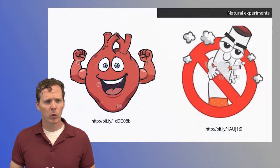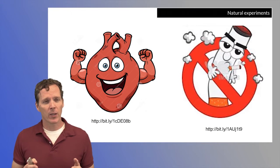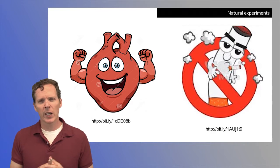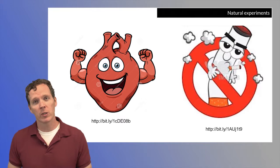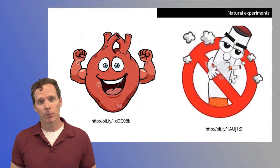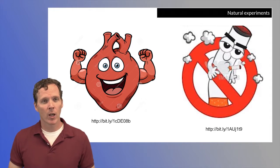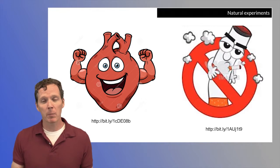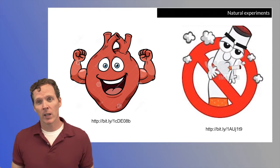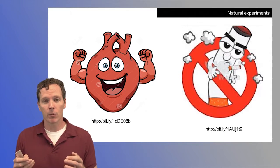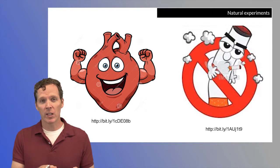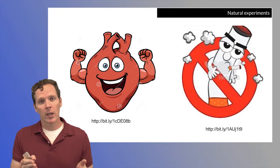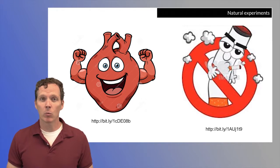Another way that people get at causality is natural experiments. A great example is smoking trials. You can't randomize people to smoke or not smoke, so you can't get the Cadillac version of a causal effect via randomization. What you can look at is places that put in smoking bans, which impact smoking behavior. You could get aggregate numbers of smoking-related cardiac issues in a city or geographic unit before and after a smoking ban went into effect.